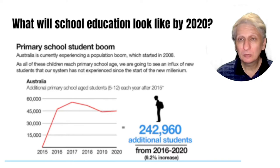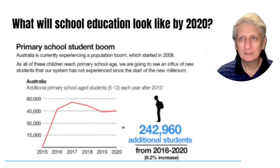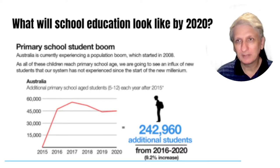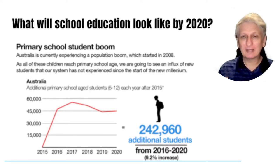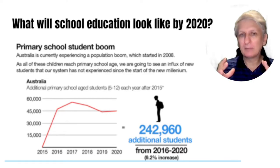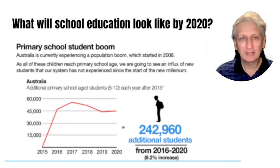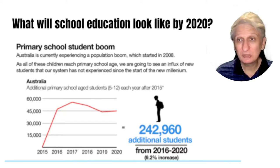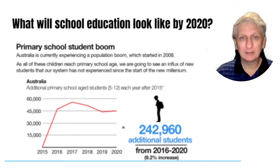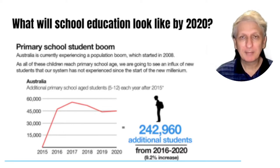In Queensland schools, when year 7 became part of high school instead of primary school, it created a bubble effect of increased numbers going through, impacting universities around 2023-2024. There's also a significant teacher shortage happening globally, with a lot of predictions and forecasts being made around its impact.